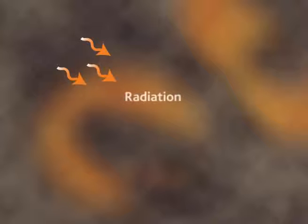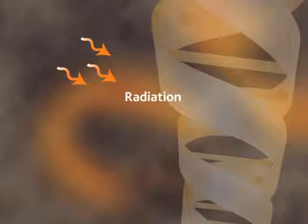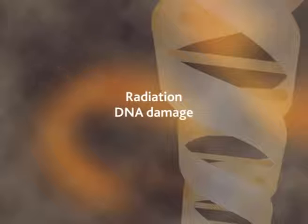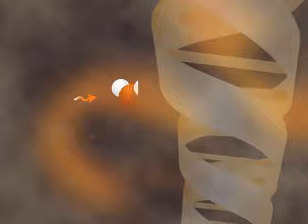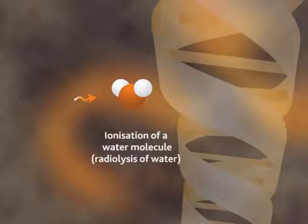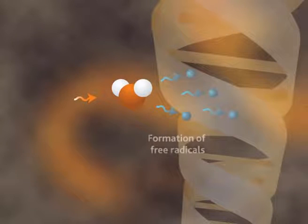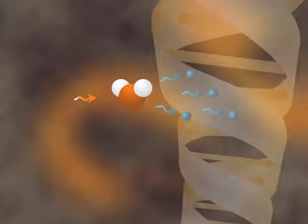All molecules can be affected by radiation, but it is when DNA is impacted that there are the greatest consequences for cellular operations. The action of ionizing radiation on DNA may be direct, as well as indirect, via the water contained inside the cells. Water consists of free radicals. These free radicals, which are chemically very reactive, damage the DNA molecules located nearby.